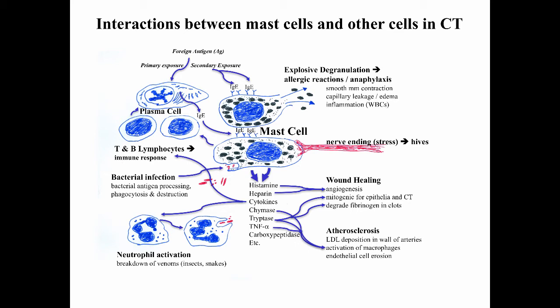These granules might activate macrophages, which in atherosclerosis will phagocytose LDL-type particles and may transform into foam cells, leading to significant pathology in blood vessels. Some granules when released may cause erosion of endothelial cells. Mast cells may modulate responses to bacterial infections — they can phagocytize and destroy bacteria, release granules to signal T cells and B cells for a more significant immune response, and stimulate neutrophil activation. Neutrophils may also be important in breaking down venoms from insect bites.